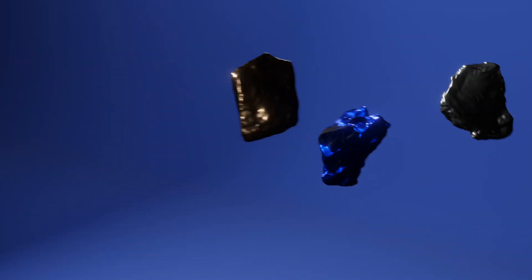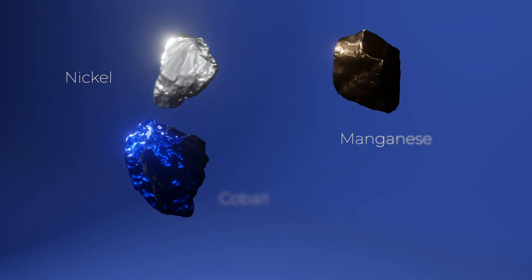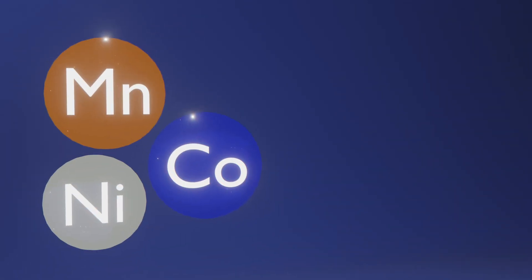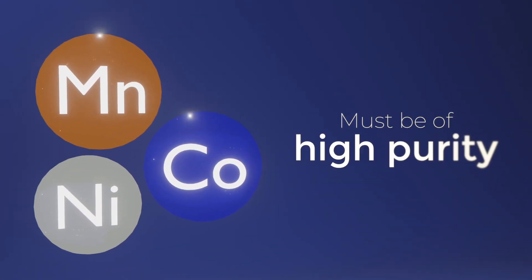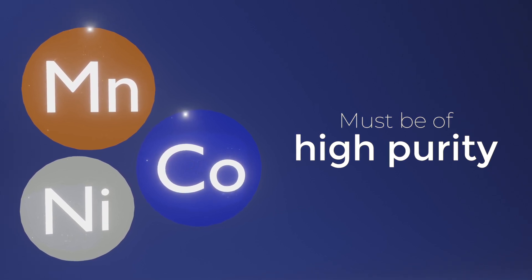It all begins with a blend of metal sulfites, including nickel, manganese, and cobalt. These materials must be of the highest purity, or this reduces the reversibility capacity of the battery cell.